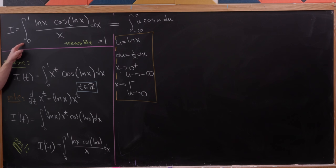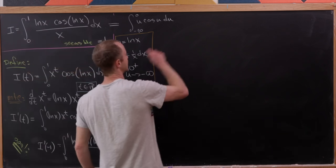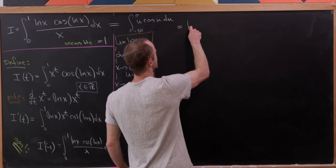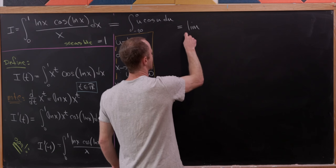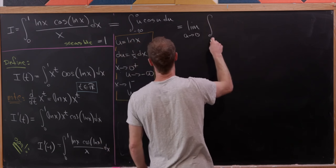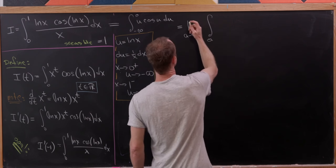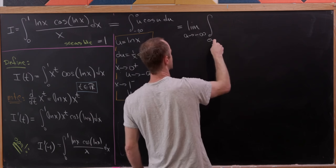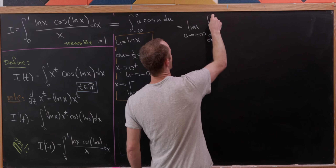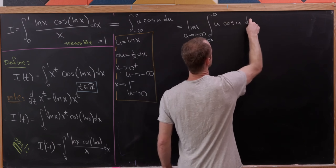So this should really be equal to the limit as a goes to minus infinity of the integral from a up to 0 of u times cosine of u du. Now we need to find the antiderivative of u times cosine u.